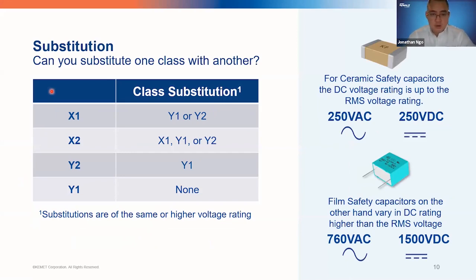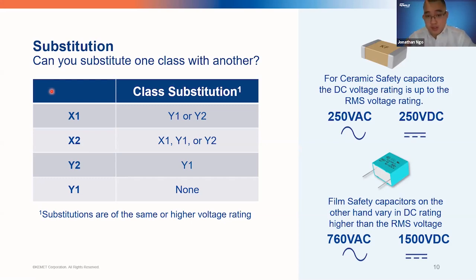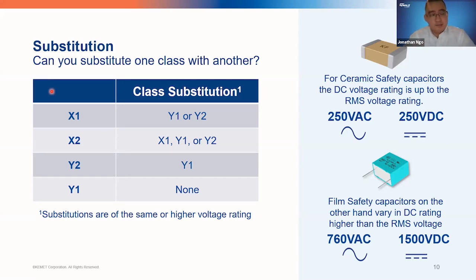On substitution — we get this question quite a bit. Can you use a Y capacitor in a line-to-line or line-to-neutral application? The answer is yes. Y capacitors have extremely high impulse ratings, so you could potentially use them in substitution for an X1 or X2. However, it's not as efficient because Y capacitors have to be conservatively designed and are generally larger because of that. So if you're concerned about not over-speccing the part for the X capacitor location, I would definitely recommend using the correct safety rating for that location.